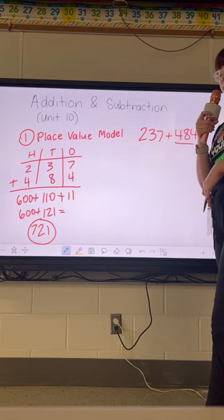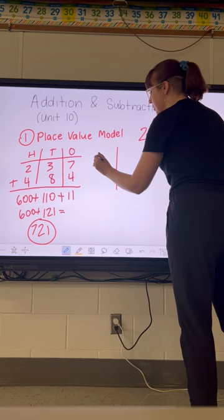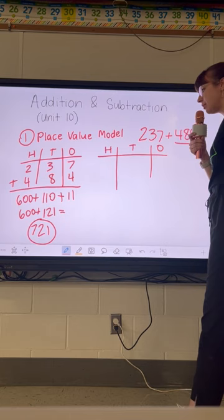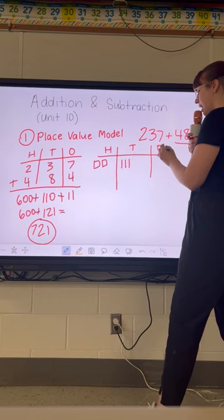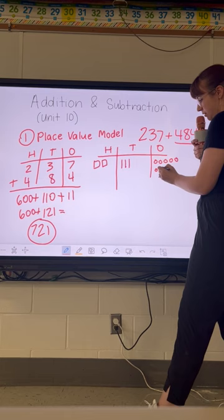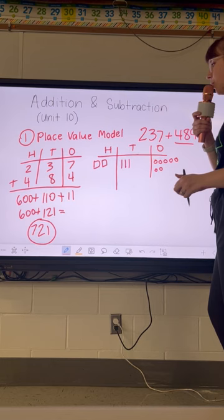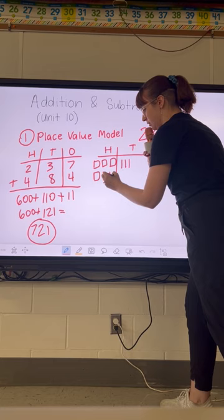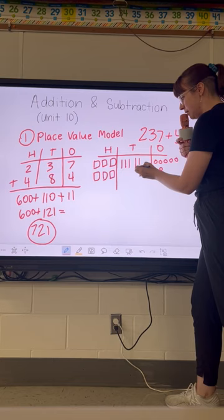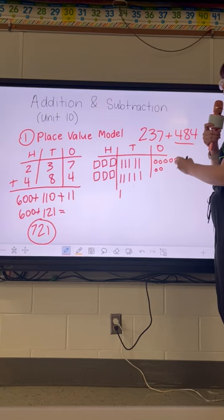On the right side of your guide, you'll see the drawing version, which is the most common. Again, it starts with the hundreds, tens, and ones chart. We're first going to draw two hundred thirty-seven: two hundreds, three tens, and seven ones. I encourage students to write in rows of five so they can easily spot tens when it's time to regroup. Now let's add in four hundred eighty-four: four hundreds, eight tens, and four more ones.